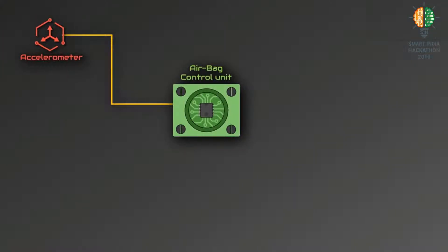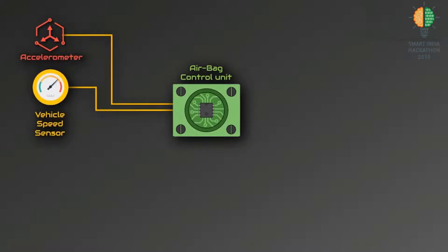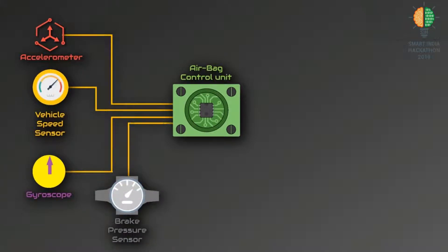The airbag control unit has an accelerometer, vehicle speed sensor, gyroscope, brake pressure sensor, door pressure sensor, seat occupation sensor, and an airbag module.